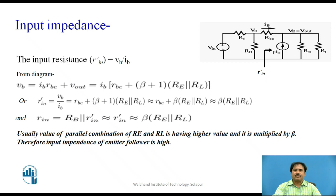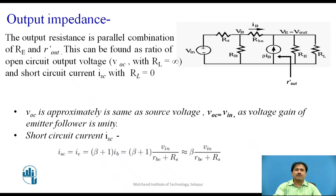We are going to discuss about the output impedance. The output impedance is defined as the ratio of the open-circuit output voltage VOC — where the load is opened — divided by the short-circuit current ISC — where RL is made zero. From the circuit, since the emitter-follower has a voltage gain equal to 1, the voltage at the output without the load is nearly equal to the input voltage VIN. So we can say, roughly, VOC is equal to VIN. Next, we define the short-circuit current ISC, which is taken to be the current IE, equal to (1 + β) into IB.